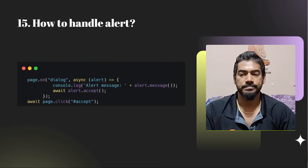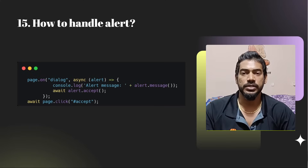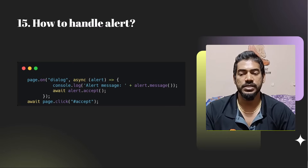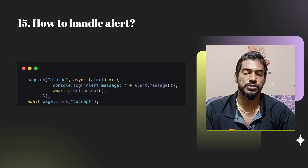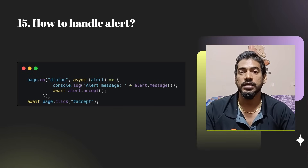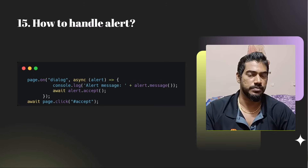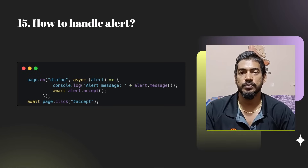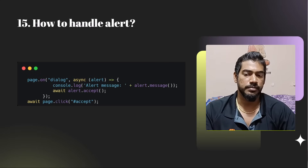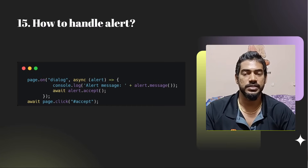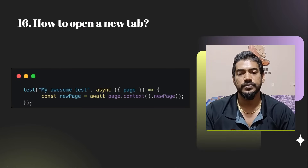How to handle alerts? Use page.on('dialog'). It's different from Selenium where after the click the alert comes and you use driver.switchTo().alert().accept(). In Playwright it works on the listener concept. By default, Playwright always dismisses alerts if you are not using page.on('dialog'). If you want to accept, pass a message, or retrieve the alert message, use the dialog handler. dialog.accept() is an overloaded function — use accept() alone to accept, or pass a string inside accept() to submit data.